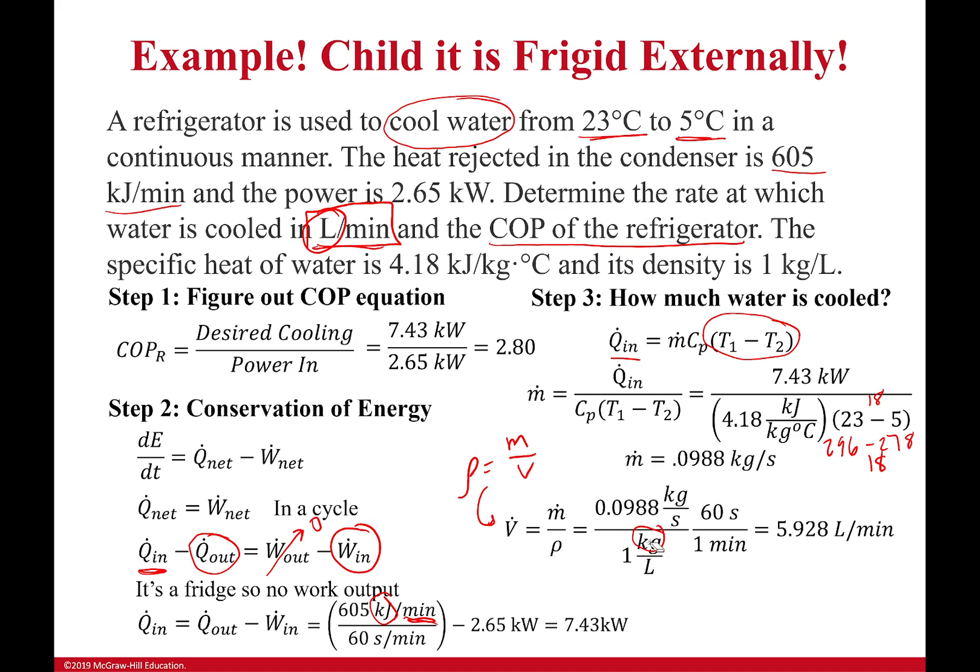With that, I get my answer: it's 5.928 liters per minute. That's it. We have our answer. We have our coefficient of performance, we have our volume flow rate, and the problem is done. So just remember for these problems, don't let it confuse you. The biggest thing is just what is my coefficient of performance equation? It's some sort of heat being moved over the power it took to do that or the energy it took to do that.